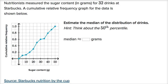Here we are asked to estimate the median of the distribution of drinks. Think about the 50th percentile. If you were to line up all of the drinks, you would take the middle drink, which you can view as what drink is exactly at the 50th percentile. That would be a cumulative relative frequency of 0.5, right here on our vertical axis. What has a cumulative relative frequency of 0.5? We see that we are right at — looks like this is 25 grams. So 50 percent of the drinks have 25 grams of sugar or less, which looks like a pretty good estimate for the median.